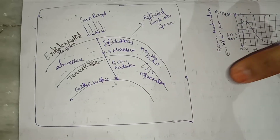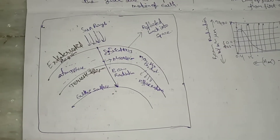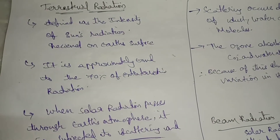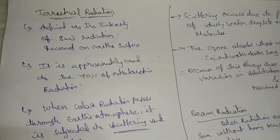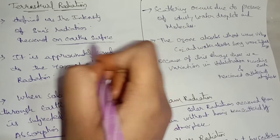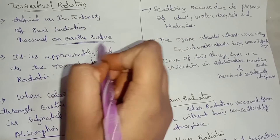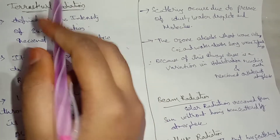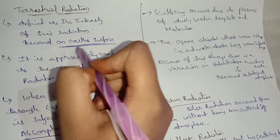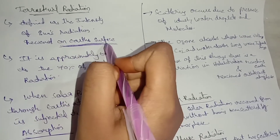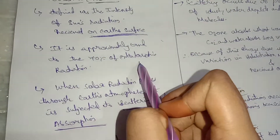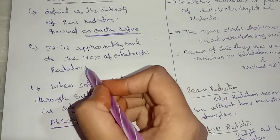This completes extraterrestrial radiation. Now, terrestrial solar radiation is defined as the intensity of the sun's radiation received on the earth's surface — that is, inside the atmosphere, unlike extraterrestrial which is outside the atmosphere. It is approximately equal to 70% of the extraterrestrial radiation.